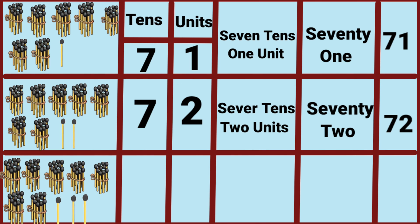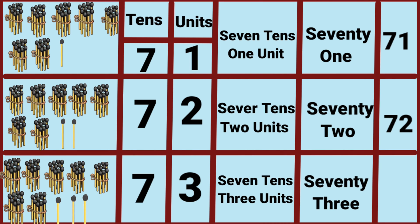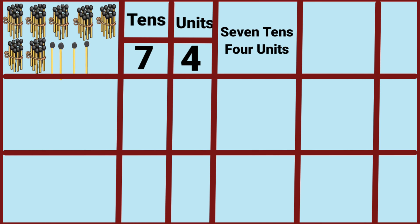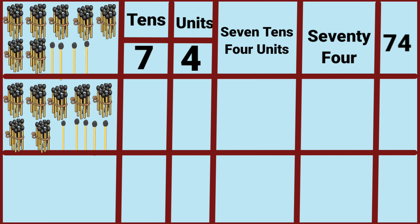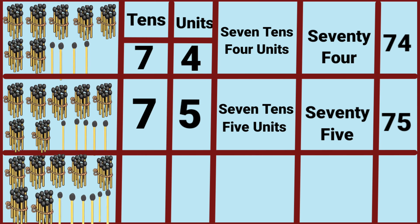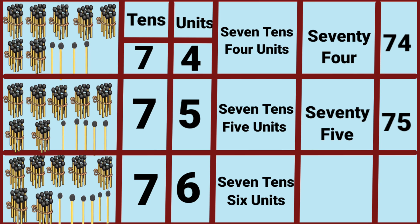Seven tenths and three units makes seventy-three. Seventy-four. Seven tenths and six units makes seventy-six.